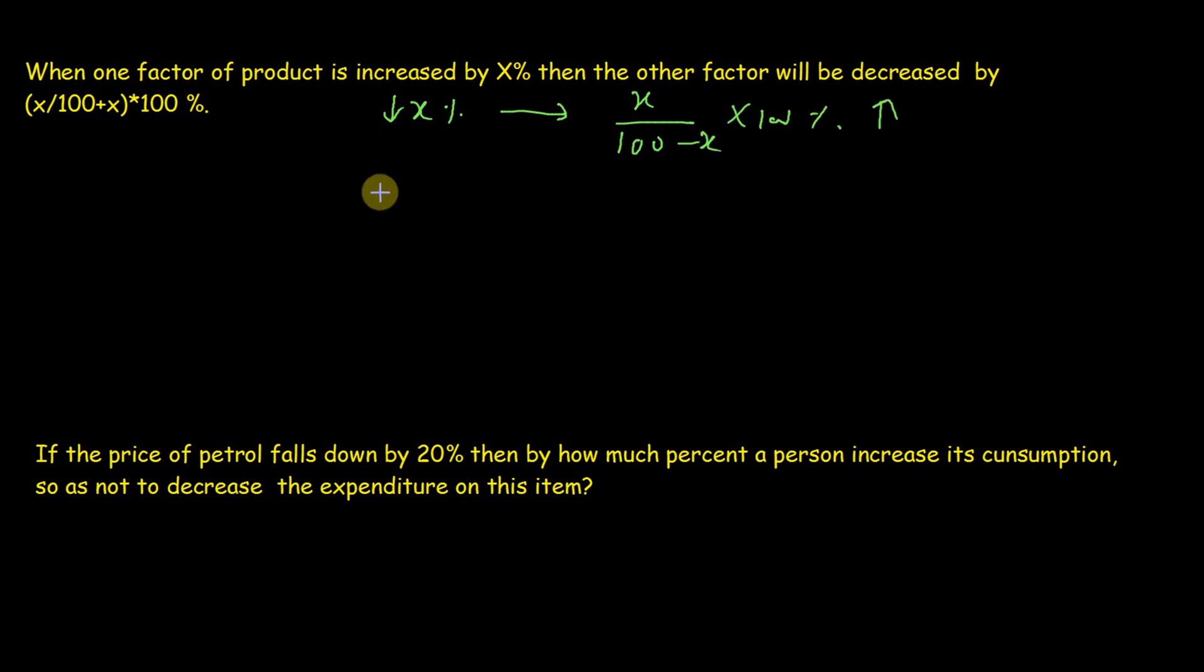We can express it in the form of a fraction: if a factor of a product is increased by p/q, then we need to decrease the factor by p/(q + p). And if one factor is decreased by p/q, then we just need to put a minus sign here to get formula for increase other factor. That's all the conclusion that we can use in product consistency type questions.